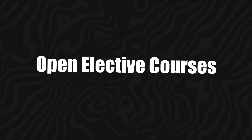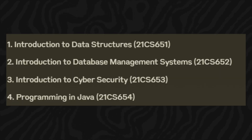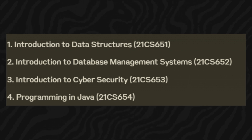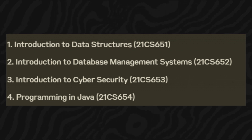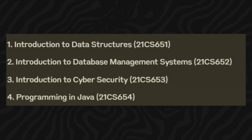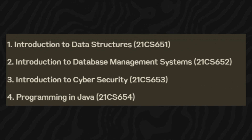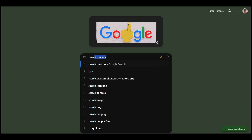The open elective courses are offered by the department to students from other departments. The first course is Introduction to Data Structures with course code 21CS651. The next is Introduction to Database Management Systems with course code 21CS652. Then Introduction to Cyber Security with course code 21CS653, and finally Programming in Java with course code 21CS654.